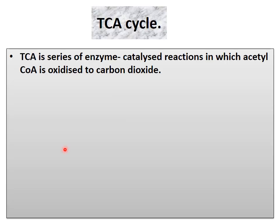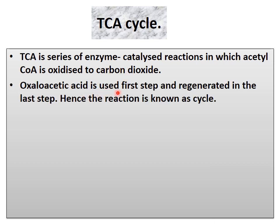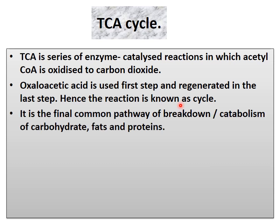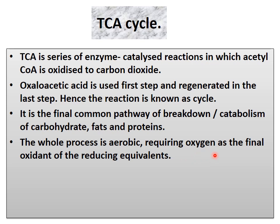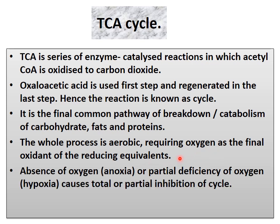TCA is a series of enzyme-catalyzed reactions in which acetyl coenzyme A is oxidized to produce carbon dioxide. Two-carbon acetyl coenzyme A is oxidized to form two molecules of CO2. Oxaloacetic acid is used in the first step and is regenerated again in the last step, which is why it is known as a cycle. It is the final common pathway of catabolism of carbohydrates, fats, and protein. The whole process is aerobic — it requires oxygen as the final oxidant of the reducing equivalents. In absence of oxygen or partial deficiency of oxygen, this cycle does not occur.